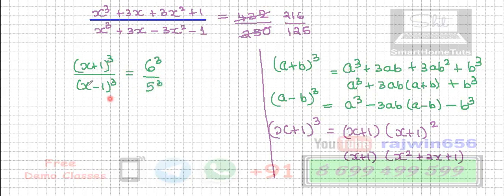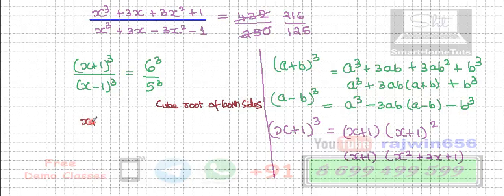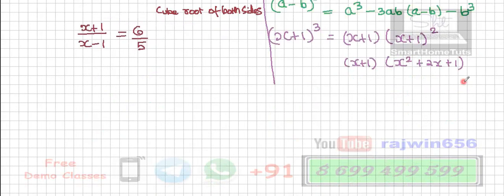So the left-hand side becomes x plus 1 the whole cube upon x minus 1 the whole cube, and this is equal to 6 cubed upon 5 cubed. Now both sides are entirely in cube form, so I am going to take the cube root of both sides. This gives x plus 1 divided by x minus 1 is equal to 6 upon 5.